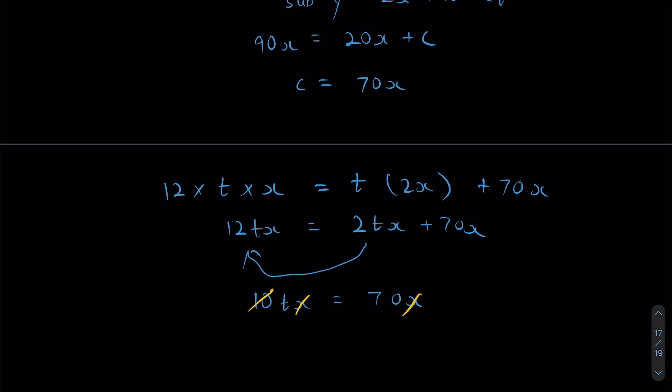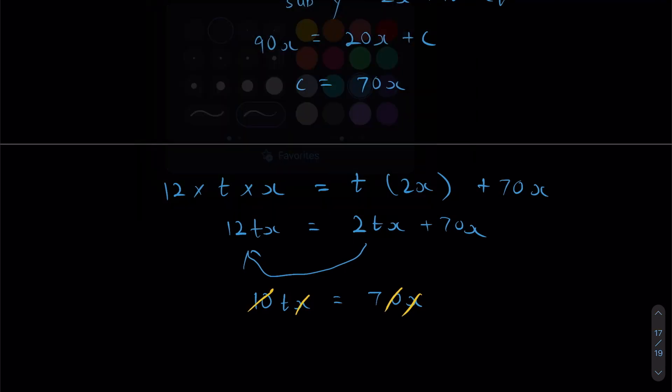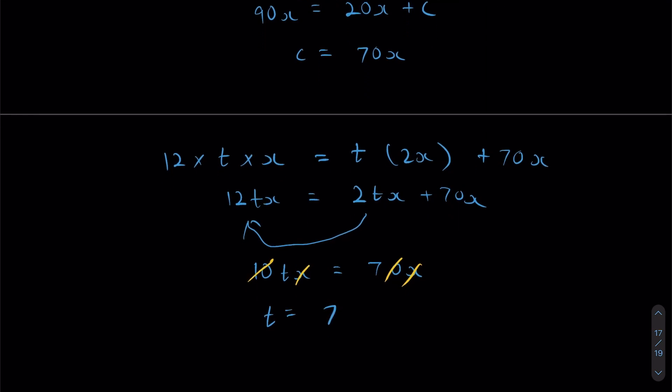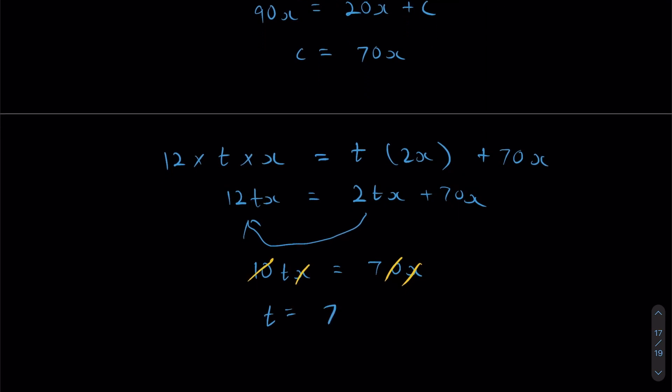Now I cancel 10, and I cancel the 0. Therefore, I can see over here that T is equal to 7. What does that mean? It will take 12 booths, exactly 7 minutes, to clear all the customers. So my final answer right here is T equals to 7.